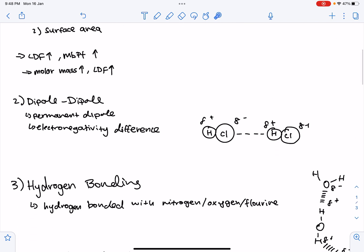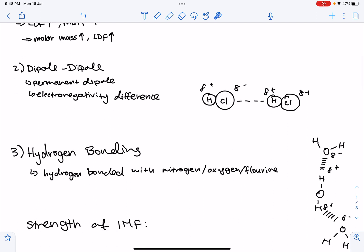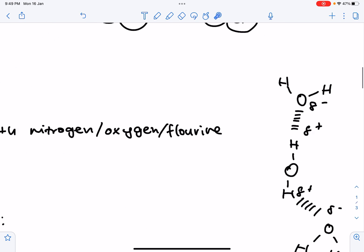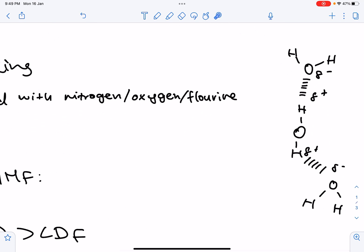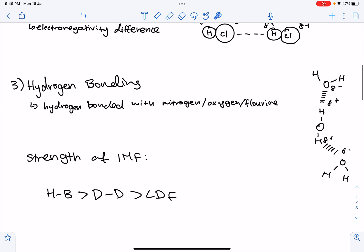Lastly, we're going to look at the third type. Hydrogen bonding is hydrogen bonded with nitrogen, oxygen, or fluorine. So this is a diagram for how it would work in water. Hydrogen bonding occurs between molecules that have an electronegative nitrogen, oxygen, or fluorine atom directly bonded to a hydrogen atom.